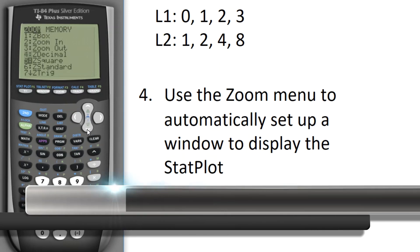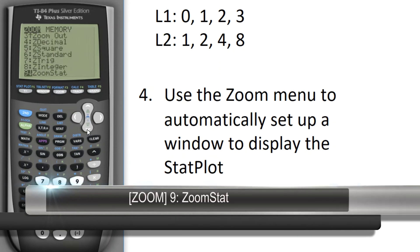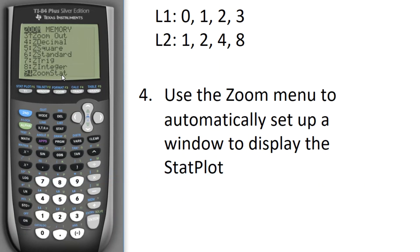We're going to scroll down and you see all of these are preset graphing windows. But we want Zoom stats for statistics. And the calculator will then look at what's in list 1 and list 2 and configure accordingly. So Zoom and then I want to choose number 9 and then I'm going to hit Graph.